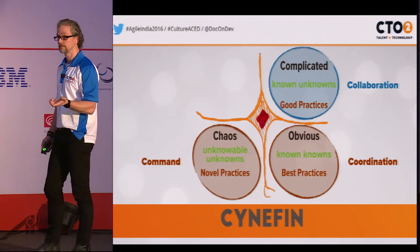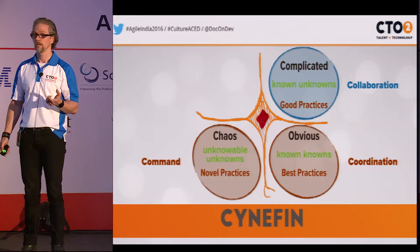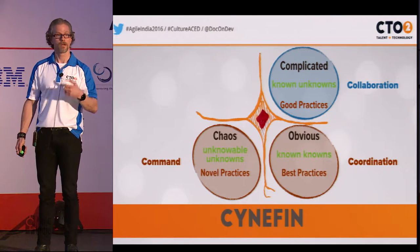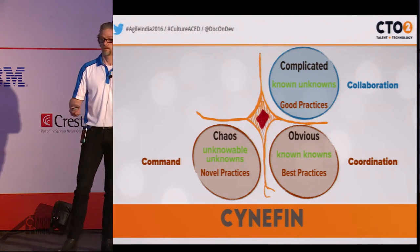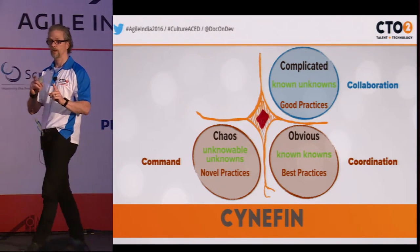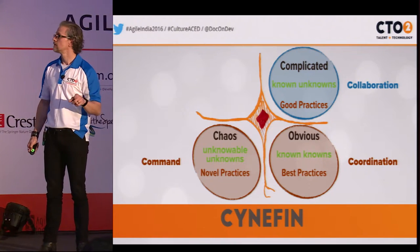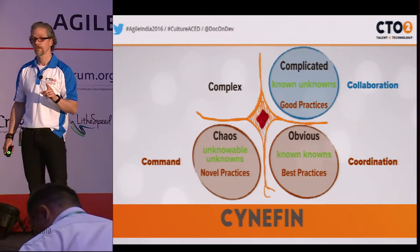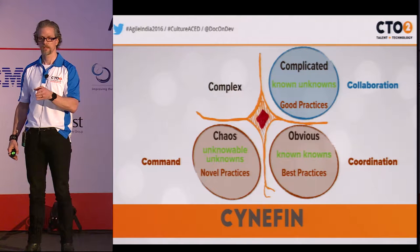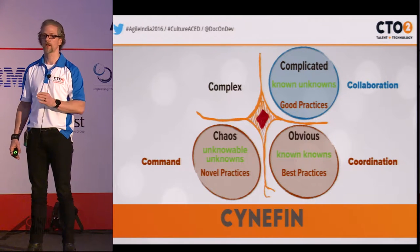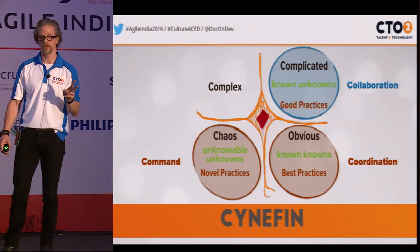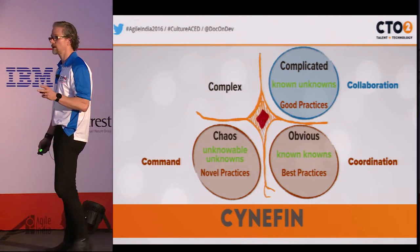Some software development falls into the complicated domain — we know what we need to build, what it will look like, and it requires some analysis and expertise to get there. But most software and product development today falls into the complex domain. If you know exactly what the product is supposed to be, how the market will respond, and exactly what will happen — one, you're fooling yourself; two, you're not developing product, you're just building it. That falls into complicated. Otherwise, we're in the complex domain.